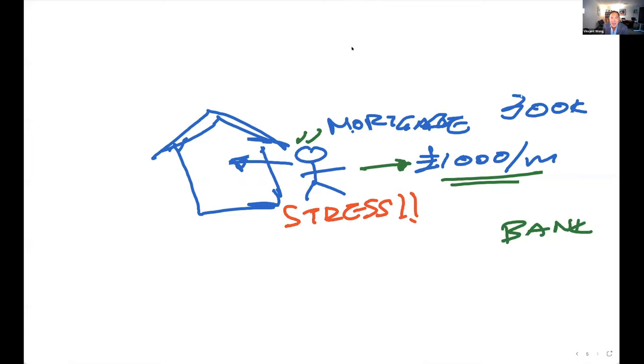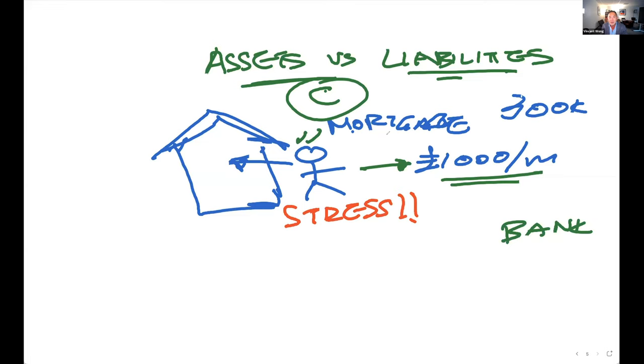Now, I want you to remember and learn this principle of assets versus liabilities. In this case, is this property a liability or an asset to this owner? It's a liability. But now I want you to remember that whether a property is an asset or liability is based on someone's circumstances. Not every property is an asset. In this case, a property is a liability. People have this notion that all properties are assets. That's not true. It really depends on the circumstance. But I want to remember that someone's liability could be your asset because your circumstance is different.